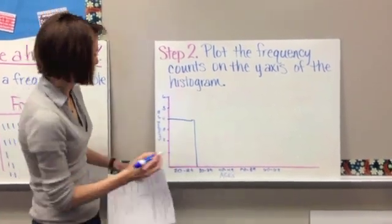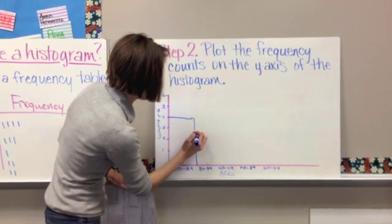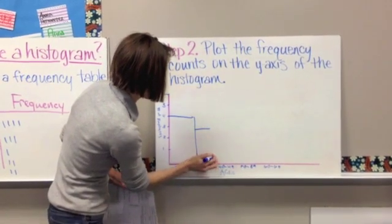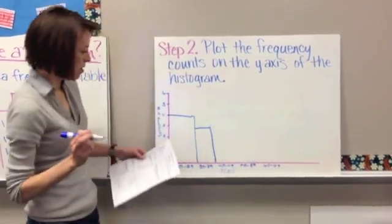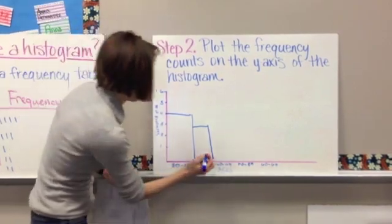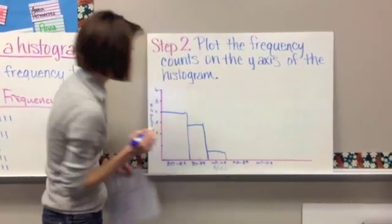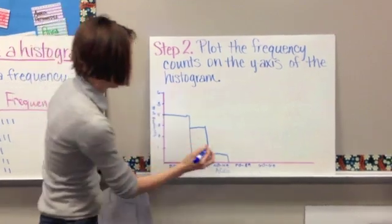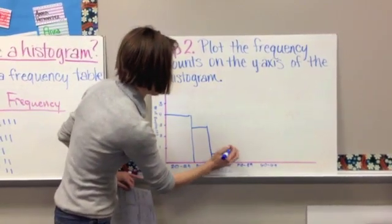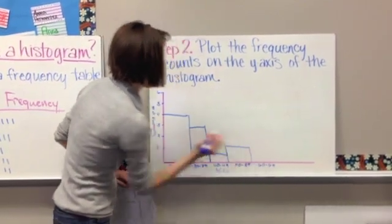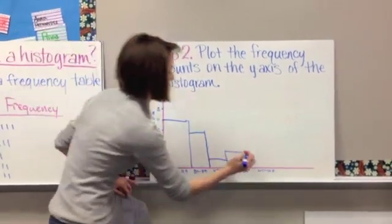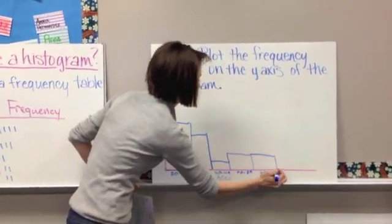Then our 30 to 39 was 3, so that's going to come right here. And our 40 to 49 was 1, so that's going to be right there. The 50 to 59 was 2, which is going to be a little bit higher. And then our 60 to 69 was also 2. Okay.